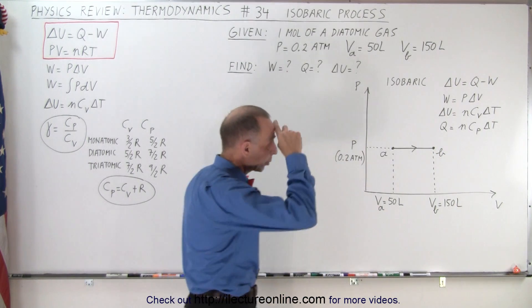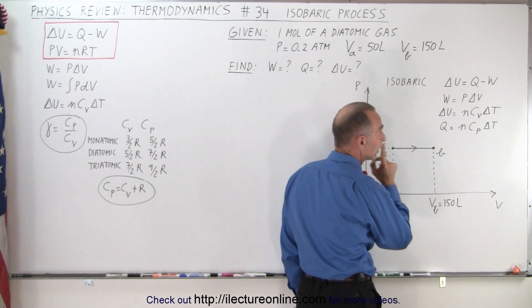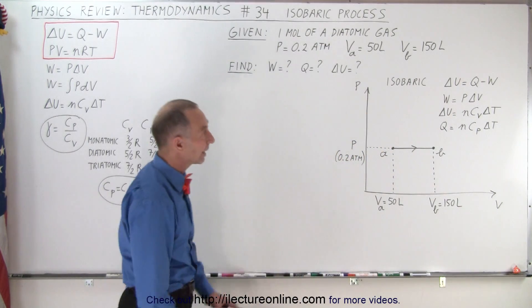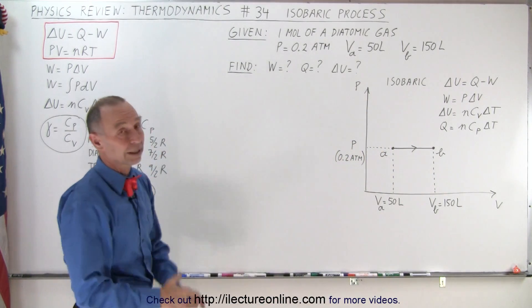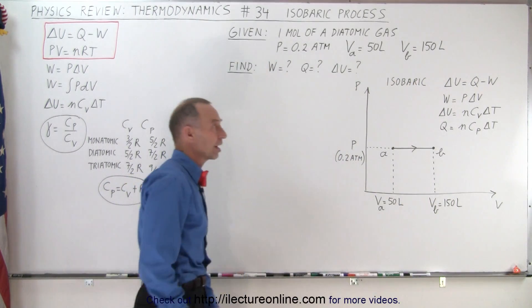But to find out what delta U is and Q, that's a little bit more difficult because we need to know the change in the temperature, which is not given. At least that's where we should start, and regardless of the problem, we should be able to just simply write it out and write the equations down as they are.